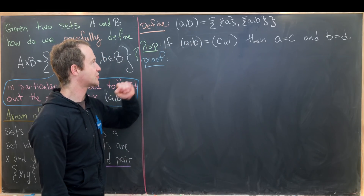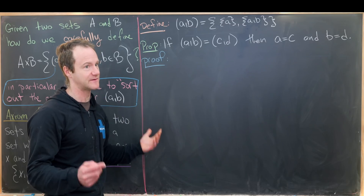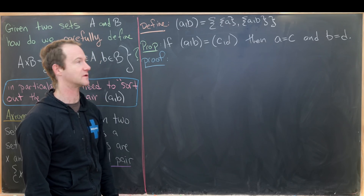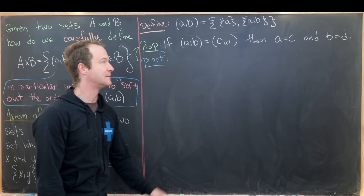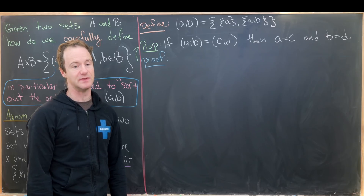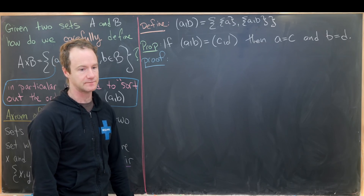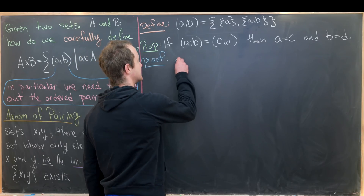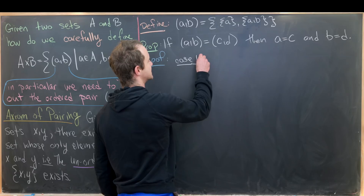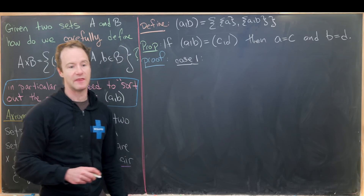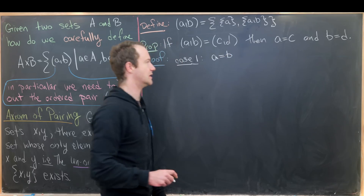Now we want to show that this definition of the ordered pair satisfies the defining condition of the ordered pair. That condition is: if (a, b) equals (c, d), then a equals c and b equals d. That's the claim we want to prove, and we're going to do this in two cases. It may not seem like we need two cases, but it's maybe easiest to approach it that way. The first case is what happens if a is equal to b.